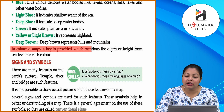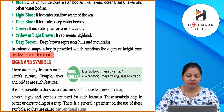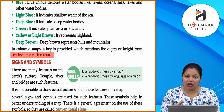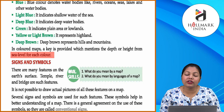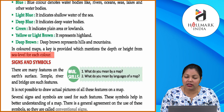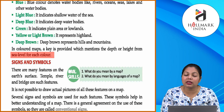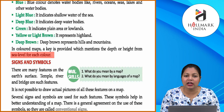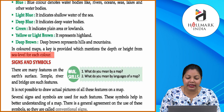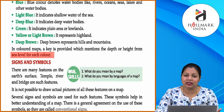Colored maps mein ek uniform color scheme hoti hai. Wo alag alag hoti hai — different colors use kiye jaate hain. Jaise ki blue color jo hai wo denote karta hai water bodies ko — rivers, lakes, oceans, seas. Light blue color indicate karta hai shallow water of the sea. Deep blue indicates deep water bodies. Green indicates plains of low land. Yellow or light brown indicates highlands. Deep brown indicates hills or mountains. Colored maps hume land ke baare mein information provide karte hain.